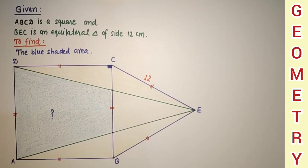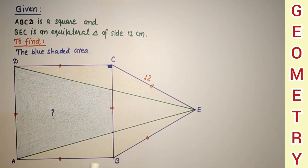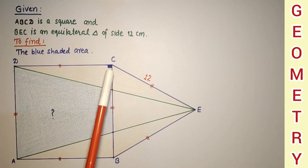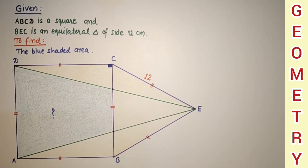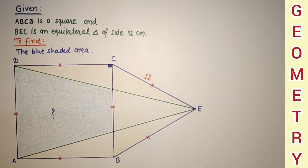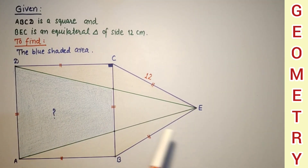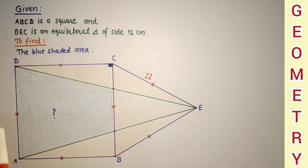Hello everyone and welcome to my channel. Here is the question: ABCD is a square and triangle BEC is an equilateral triangle with BC as base. One of the sides of the equilateral triangle is 12 centimeters. Segments AE and DE are joined and we have to find the area of this trapezoid — the blue shaded area.